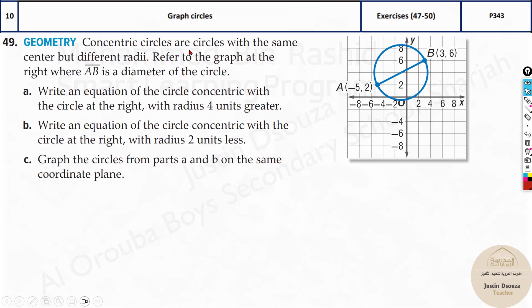This one is about concentric circles, which are circles with the same center but different radii. Refer to the graph at the right where AB is the diameter of the circle. Write an equation of the circle concentric with the circle at the right with a radius of four units greater. The center is same but there is four more extra radius. So it's bigger. First we'll find this radius and then add four to that. We can use the distance formula here.